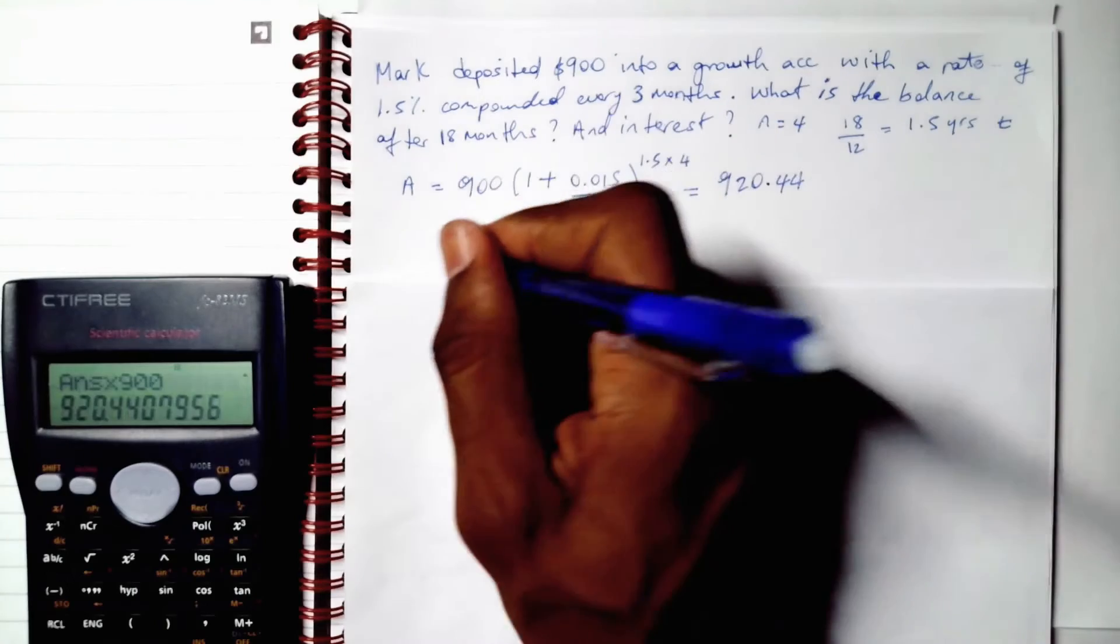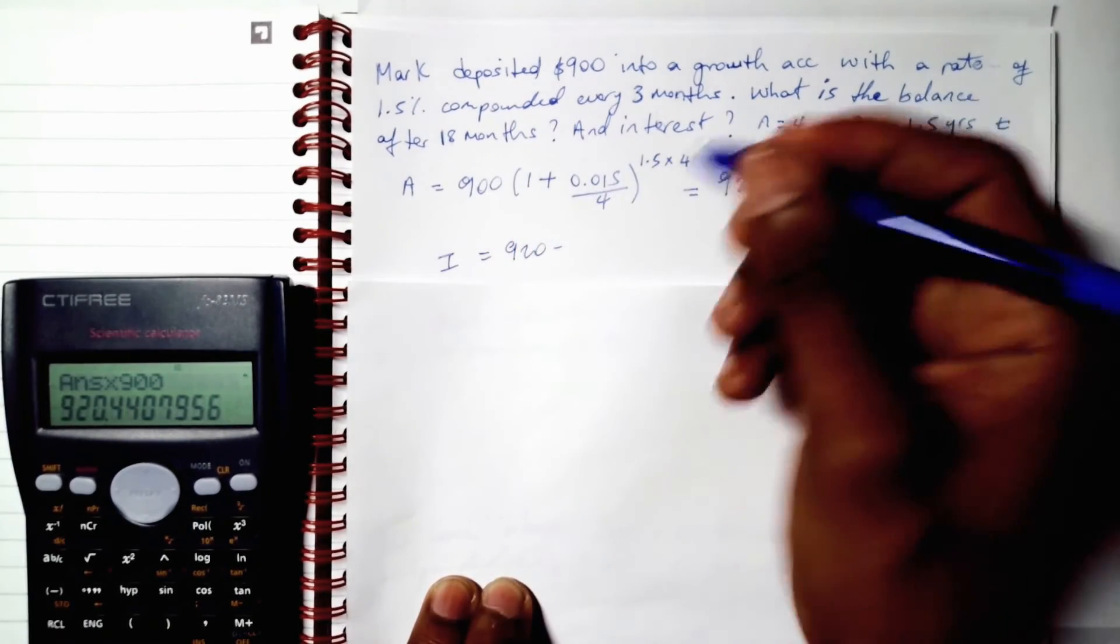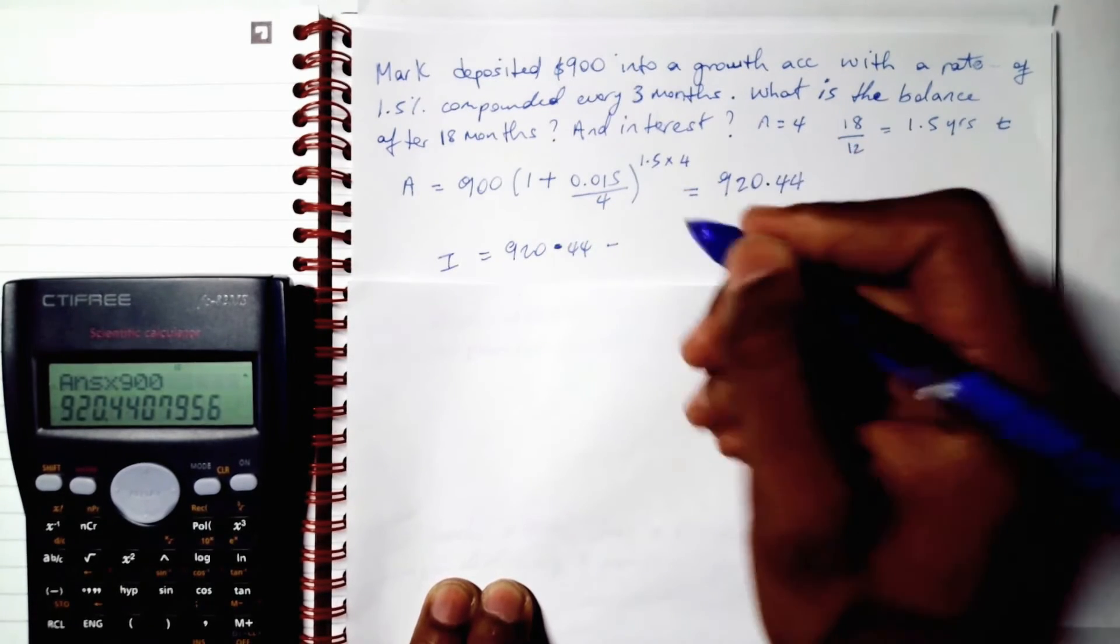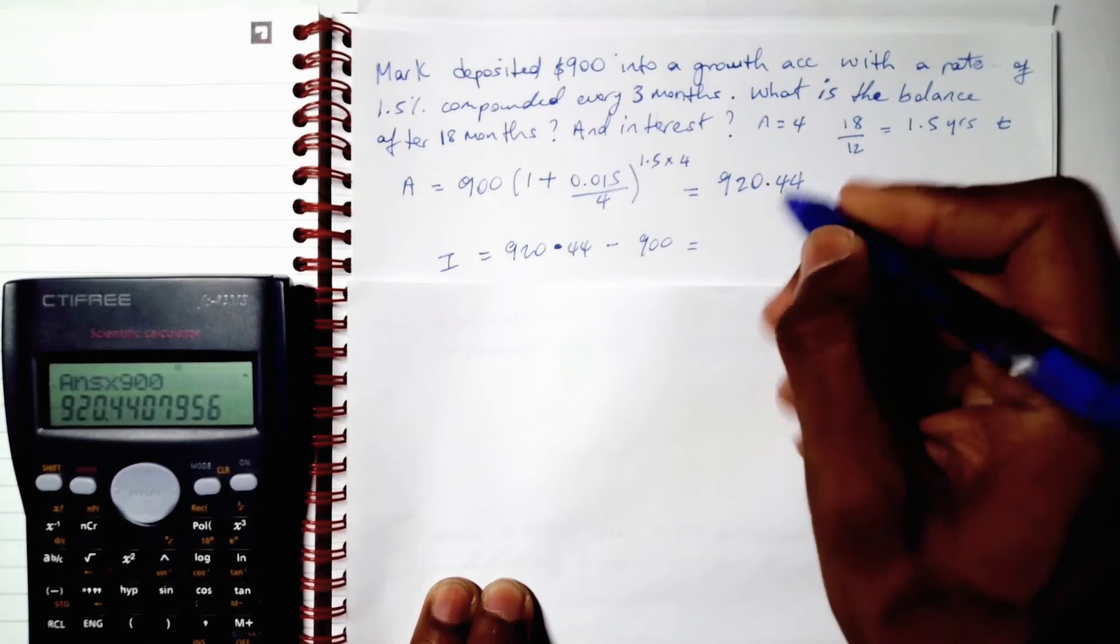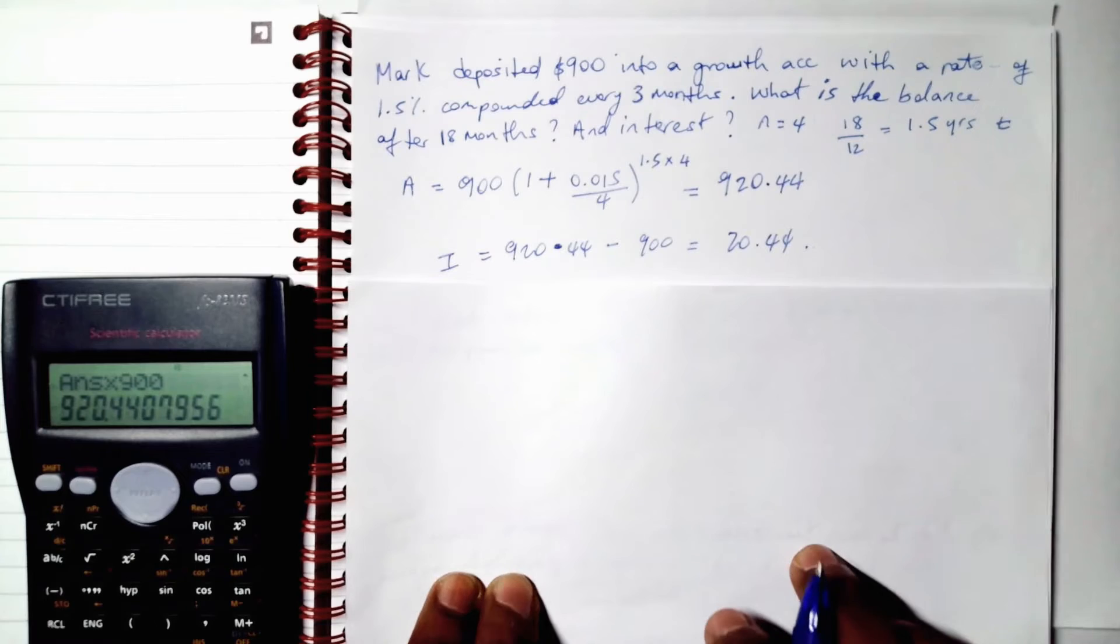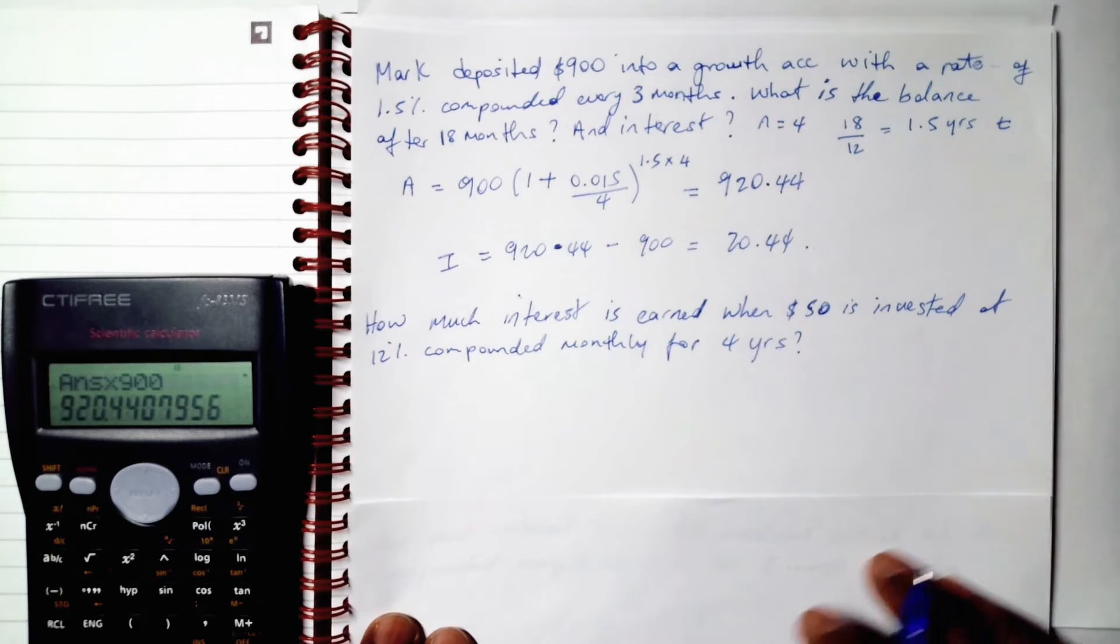Now our interest will, without any doubt, be 920.44 minus 900 which is going to be 20.44. Done. Easy, easy. Next example.